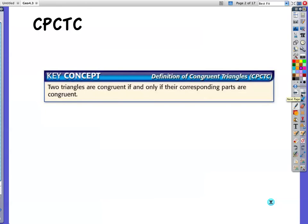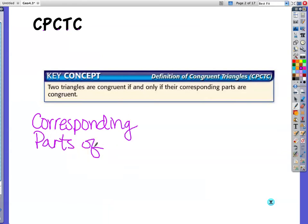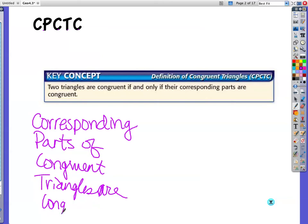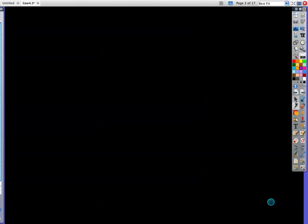We're going to start off with CPCTC. We don't say definition of congruent triangle all the time, we say CPCTC: corresponding parts of congruent triangles are congruent. This is in the book so you don't have to write this down, but this would be good.